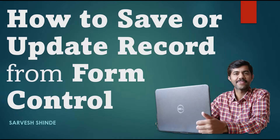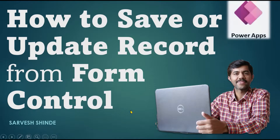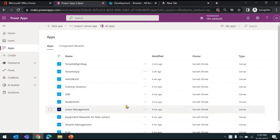In this video, we are going to look at how we are going to save or update a record from form control in Power Apps. We'll be making use of two functions mainly: the SubmitForm function and the Patch function. We'll also look at what are the differences between these two and how the SubmitForm function helps in validation when you are using it with the form. Now let's switch back to Power App Studio.